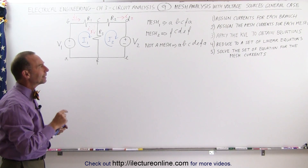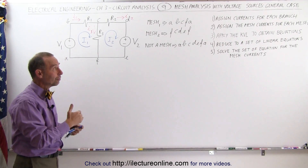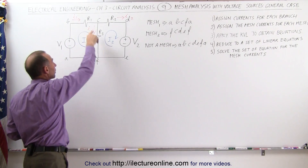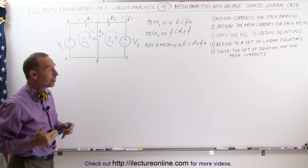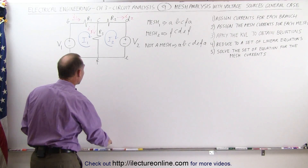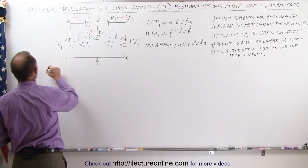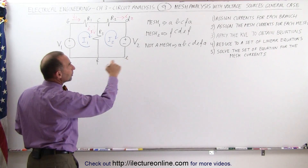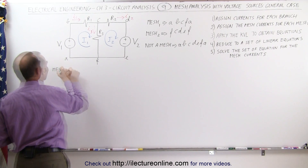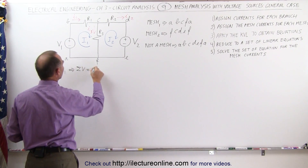The next thing we want to do is apply KVL — Kirchhoff's Voltage Law — to obtain equations. KVL means that when we go all the way around a complete loop and add up all the voltages, they should add up to zero. Let's do that for each of the two meshes. For mesh 1, we sum up all the voltages around the loop, and they should equal zero.